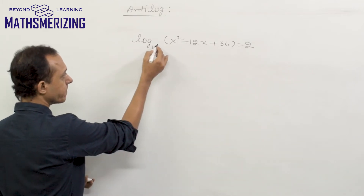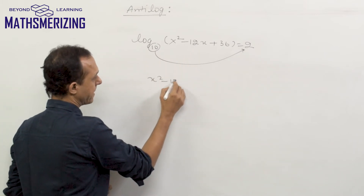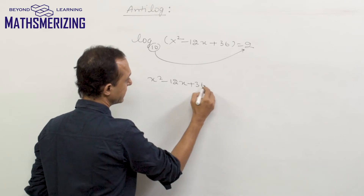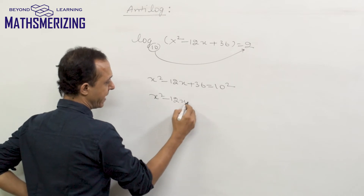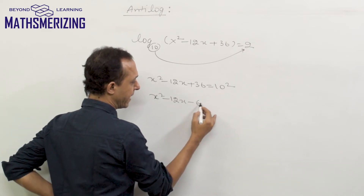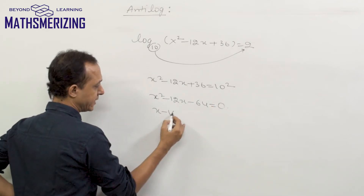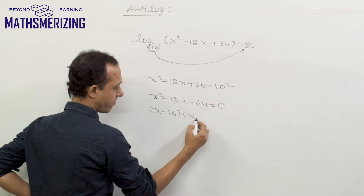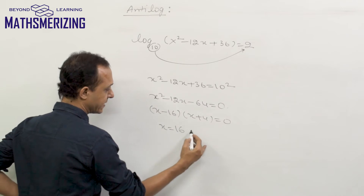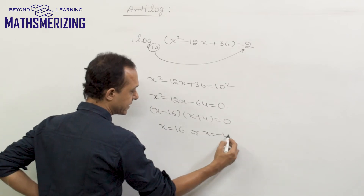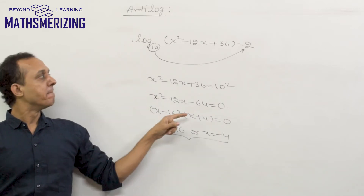We remove the log by taking antilog, giving x² − 12x + 36 = 10² = 100. Rearranging: x² − 12x + 36 − 100 = 0, so x² − 12x − 64 = 0, which factors as (x − 16)(x + 4) = 0. Therefore x = 16 or x = −4.